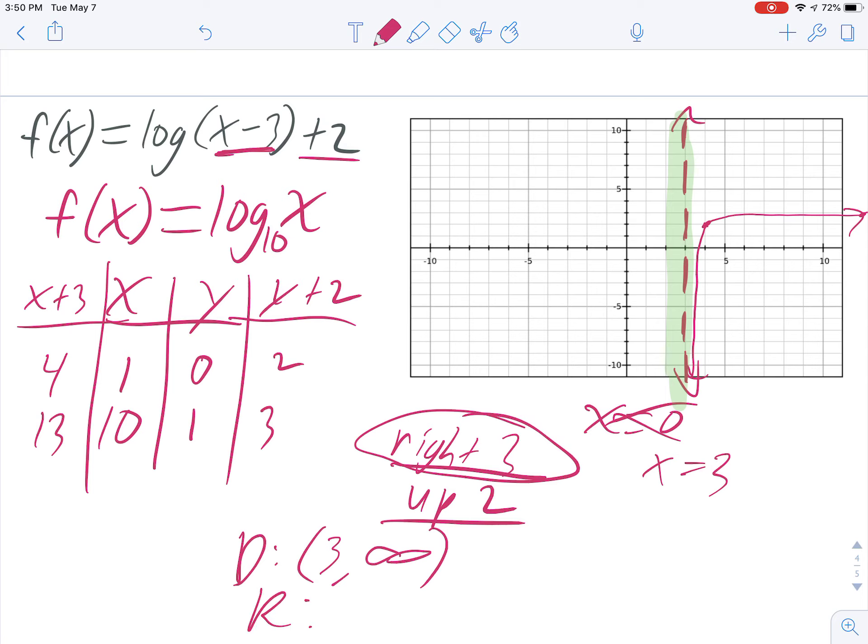The range, remember that's down to up. Does this go down forever? Yes, it does. Does it go up forever? Yes, it does. It looks like it's really flattening out here, but it is continuing to rise. So even though it rises very slowly, it does rise forever. So our range is negative infinity to infinity.